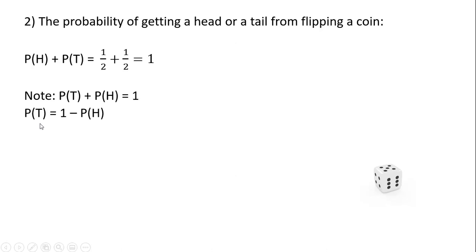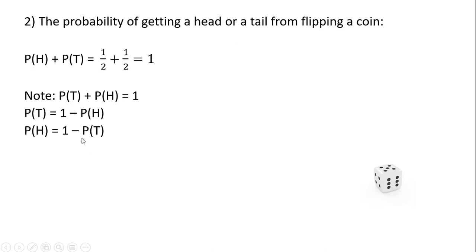Just to note, the probability of getting a tail will equal 1 minus the probability of getting a head, if you were just to solve this equation for the probability of getting a tail. Or likewise, if you were to solve for the probability of getting a head, it's just 1 minus the probability of getting a tail.